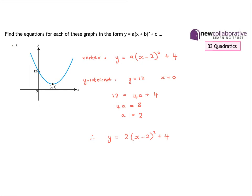Here's the solution to the first one. We use the vertex first to see that the equation is y = a(x - 2)² + 4, because the vertex is at the point (2, 4). Then we use the y-intercept by substituting y = 12 and x = 0 to find a. In this case, a = 2, so the equation of this graph is y = 2(x - 2)² + 4.